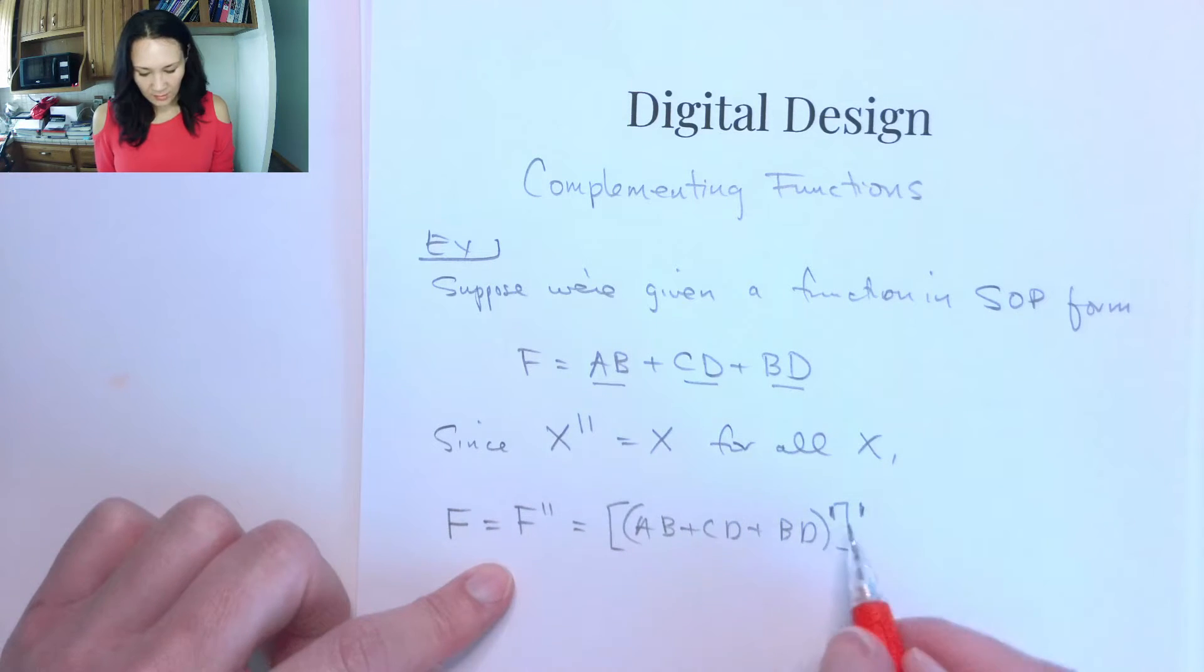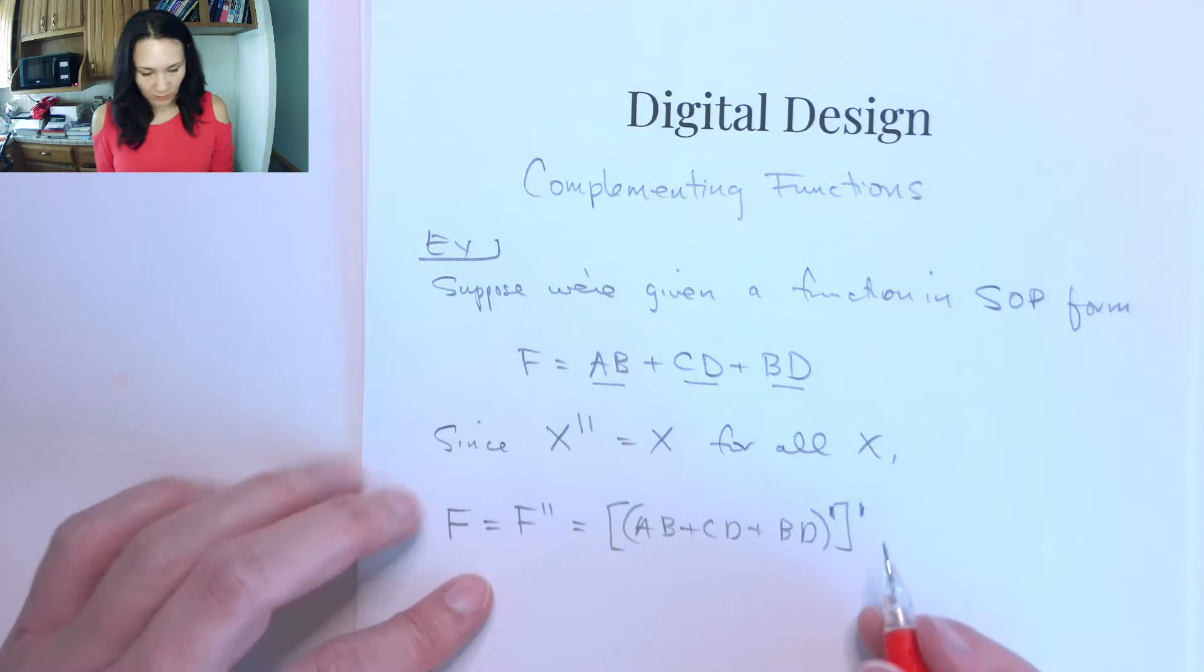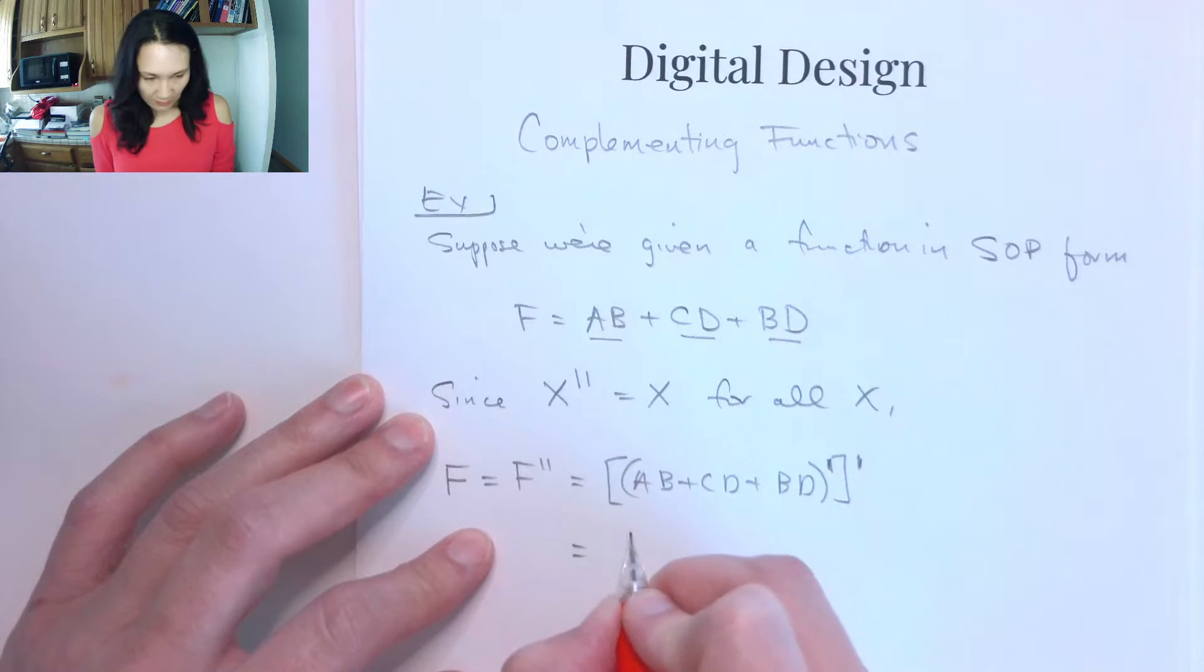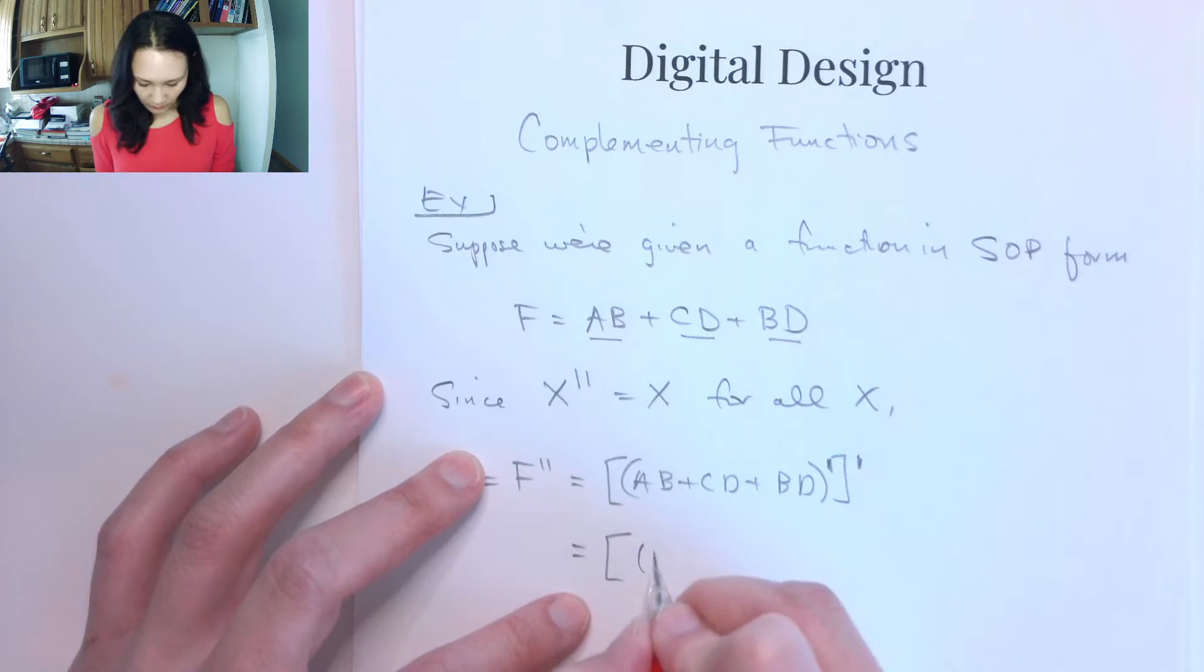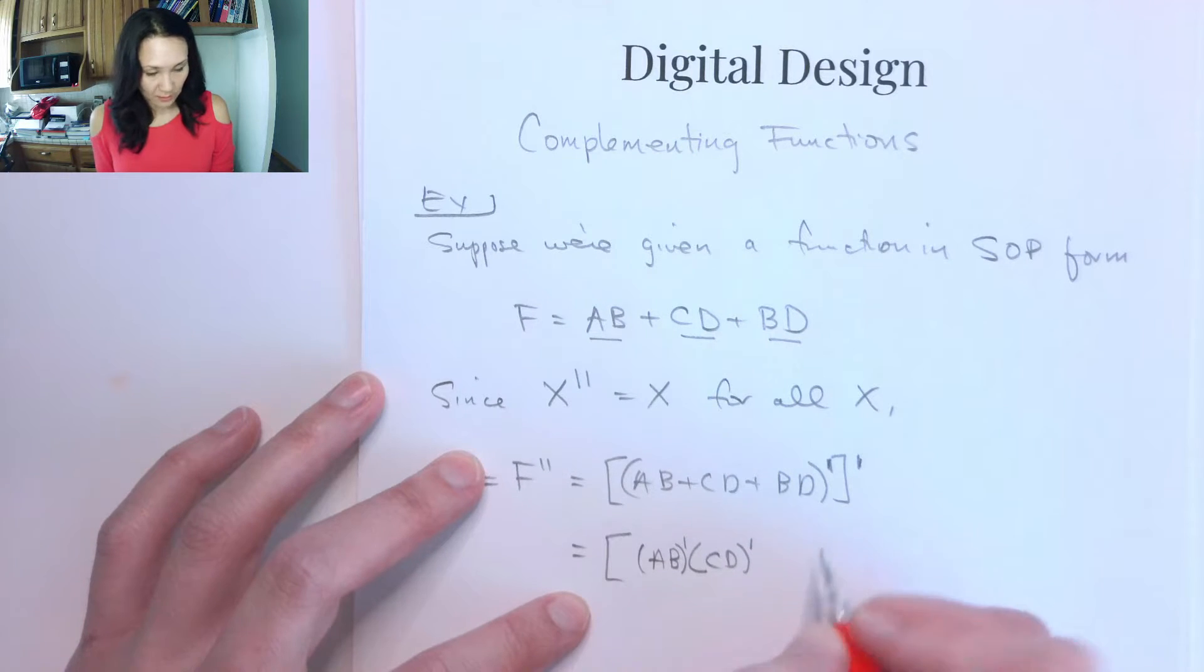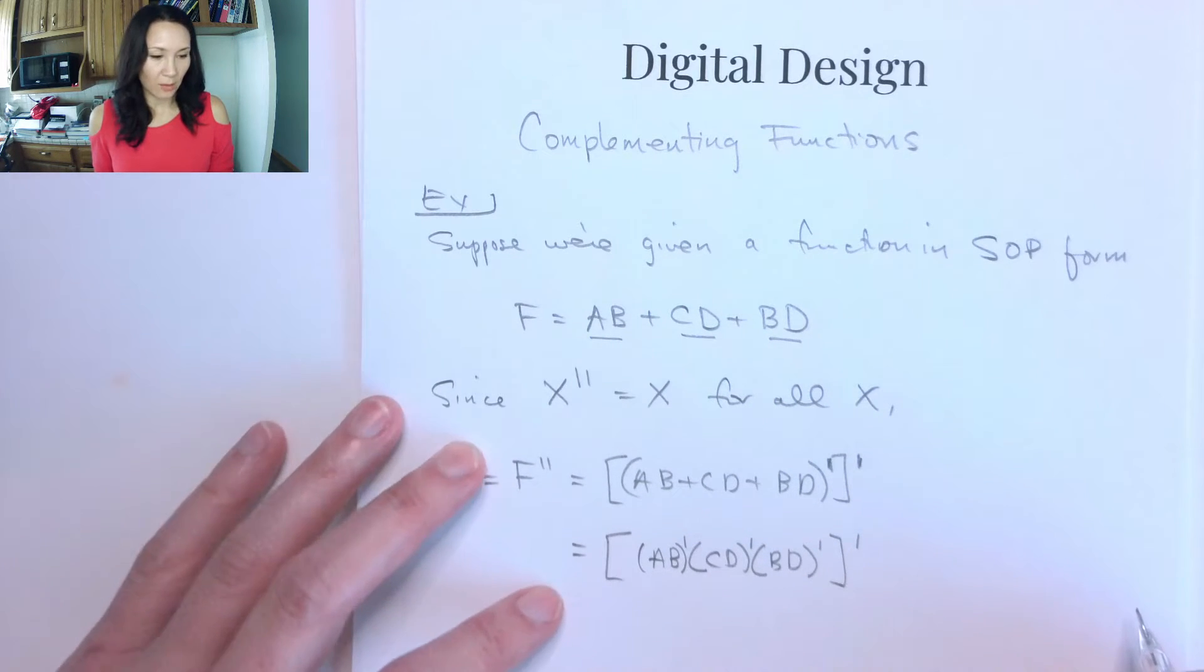So if I use this inner complement here to apply De Morgan's to the inside of the parentheses, this is going to give me AB complement. I'm going to change the OR to an AND. CD gets its own complement. I change this OR to an AND, and BD gets its own complement. And now I still have this complement on the outside.